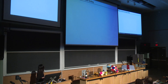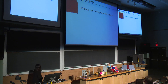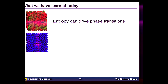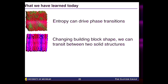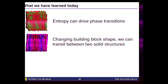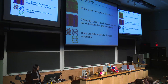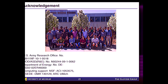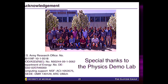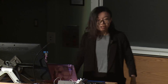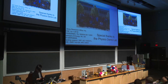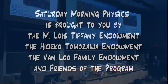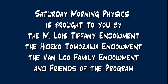For the BCC-to-simple cubic case, we can see there is no real discontinuity — similar to the demagnetization where when you reach a critical temperature it just happens. So what we learned today: first, entropy can drive phase transitions by showing how spheres can order. Changing building block shapes, we can translate between two solid structures. And there are different kinds of phase transitions in nature. Thank you everyone, and special thanks to the physics demo lab — without them this cannot happen.